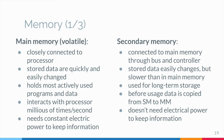Main memory is sometimes called volatile because it loses its information when power is removed. Secondary memory is usually non-volatile because it retains its information when power is removed. However, it needs power when information is stored into or retrieved from it.